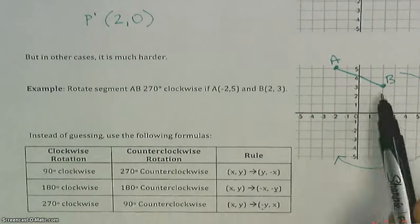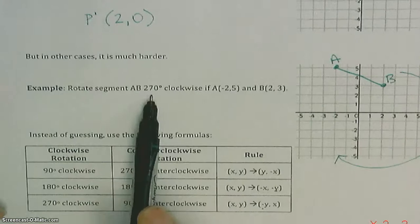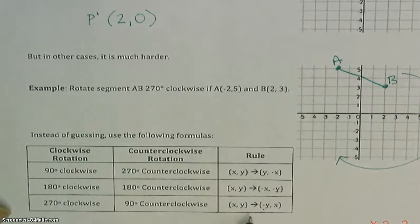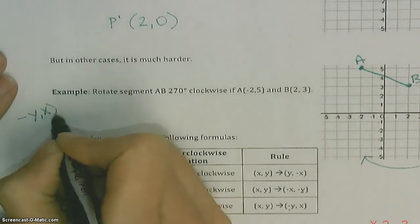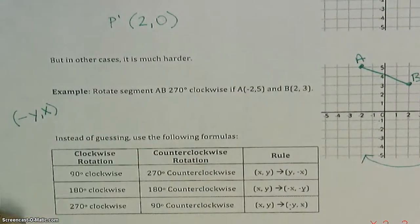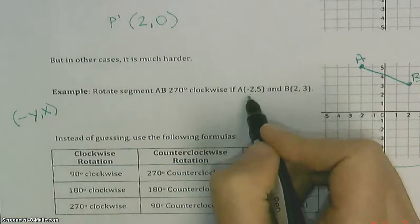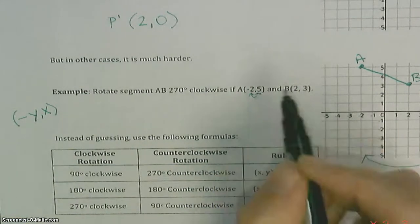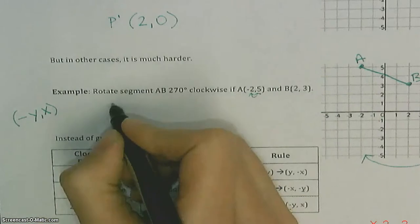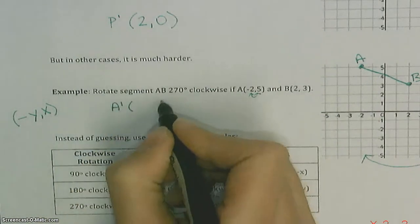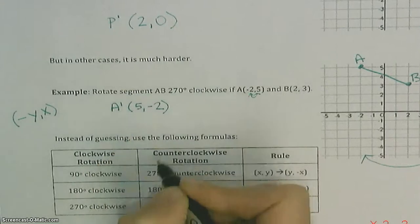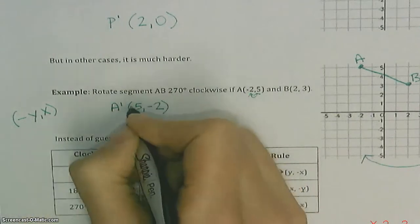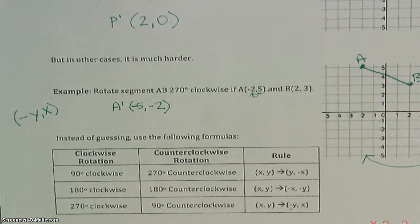We're going 270 degrees clockwise, so the rule is (−Y, X). For point A at (−2, 5): switch to (5, −2), then change the sign of the front value — A prime is at (−5, −2).